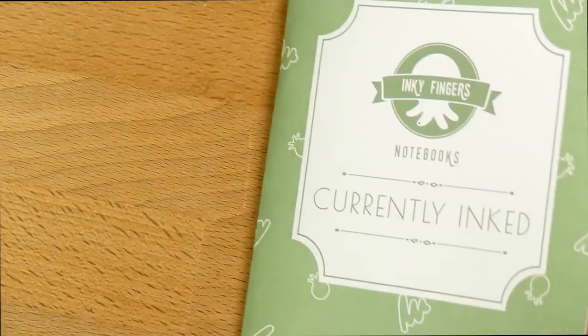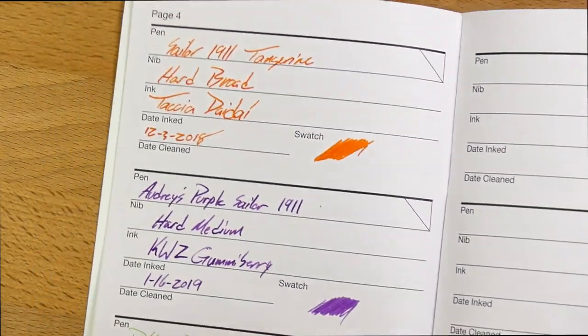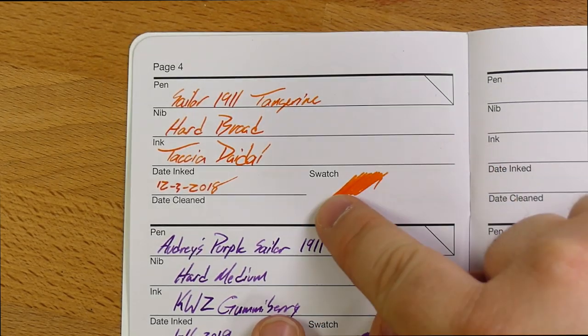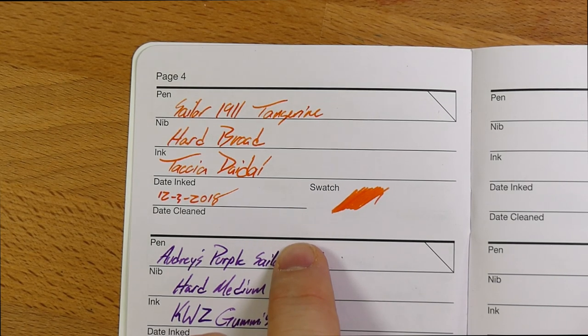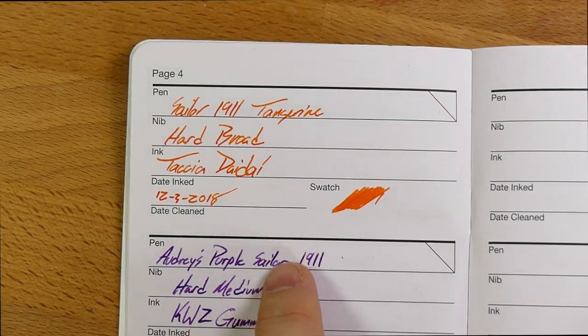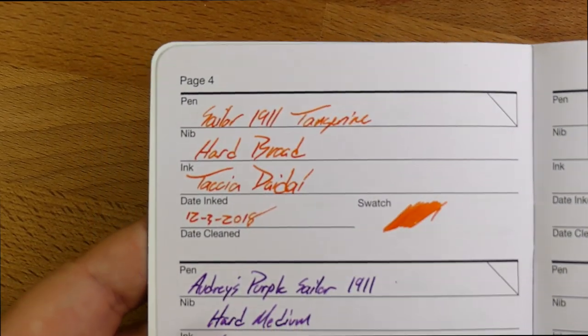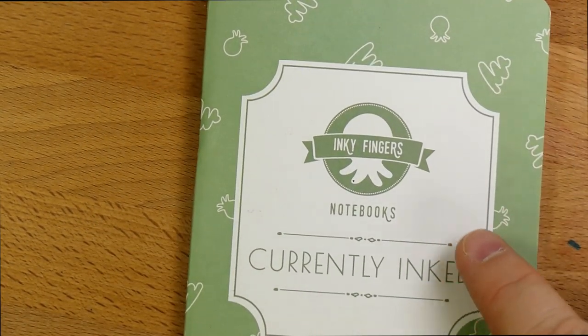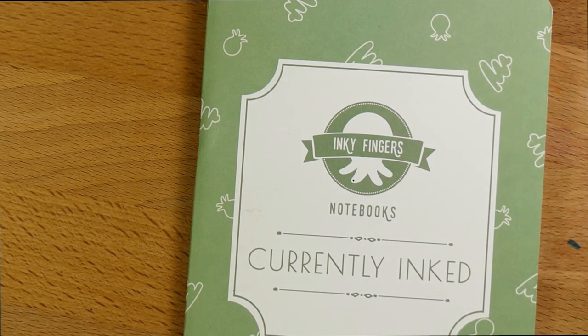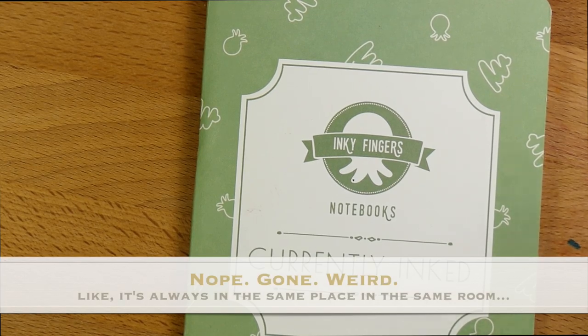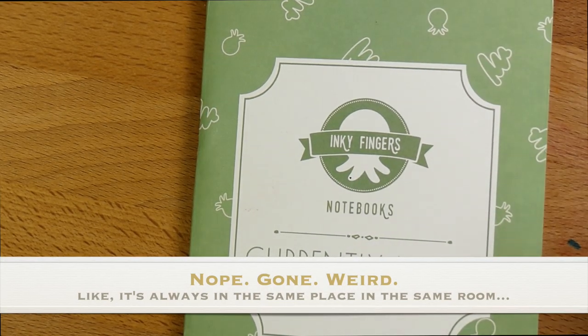And then here it is in a currently inked journal. This is wheat straw paper. And you see the color comes through very strongly there. It looks nice. You don't get any shading or any sheen on this one. But it comes off as a nice orange. I like the way it looks. And that's actually the only one I have to show you because I cannot find my Tomoe River ink journal. It's just gone missing all of a sudden. So if I find that before I publish this video, I'll put in a picture here. But it's going to look roughly the same. This ink doesn't have any shading or sheen or anything like that.